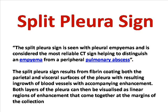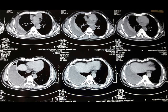The Split Pleural Sign is seen with pleural empyemas and is considered the most reliable CT sign helping to distinguish an empyema from a peripheral pulmonary abscess. This sign is very important to distinguish between these two conditions.